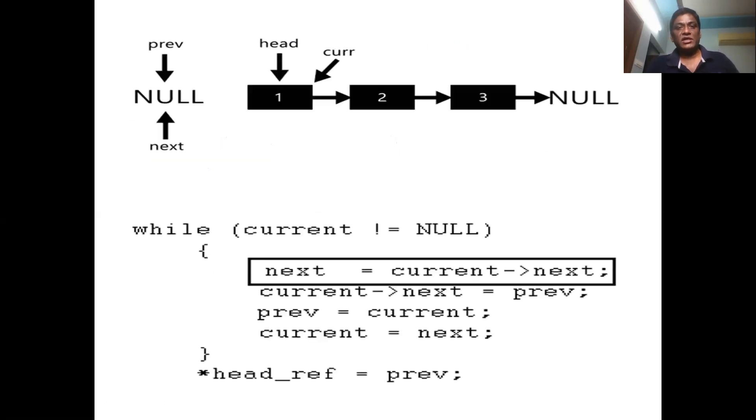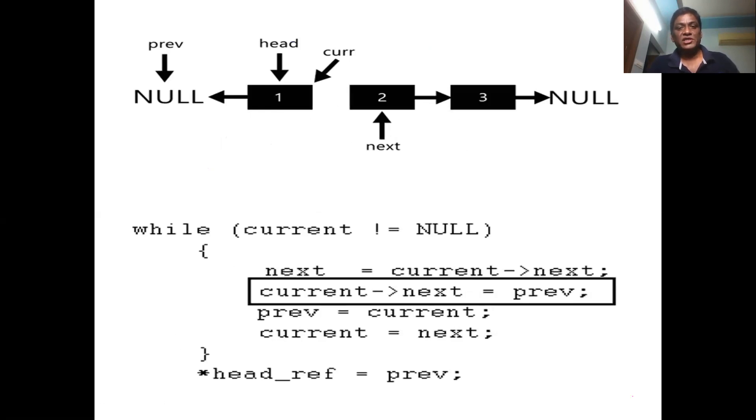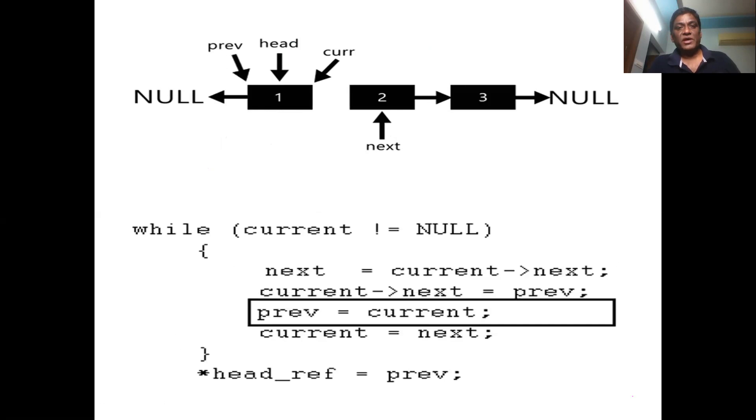The reversal loop runs while current != null. Inside the loop, the four steps are: nxt = current->next, current->next = previous, previous = current, current = nxt. It is difficult to understand just from the code, so looking at the step-by-step diagram will make it easier to follow how the links change at each iteration.